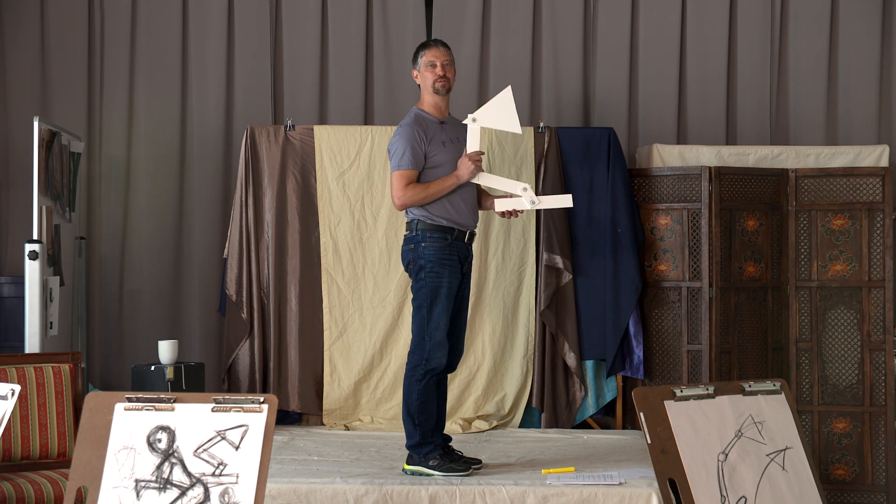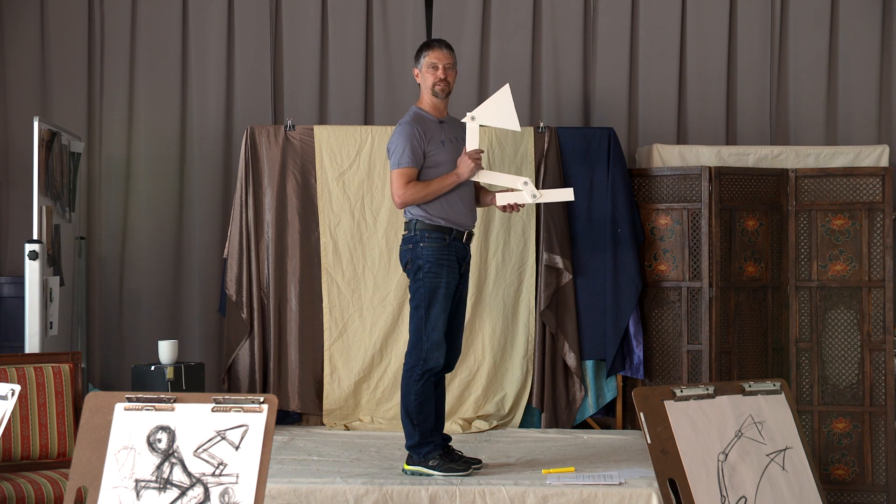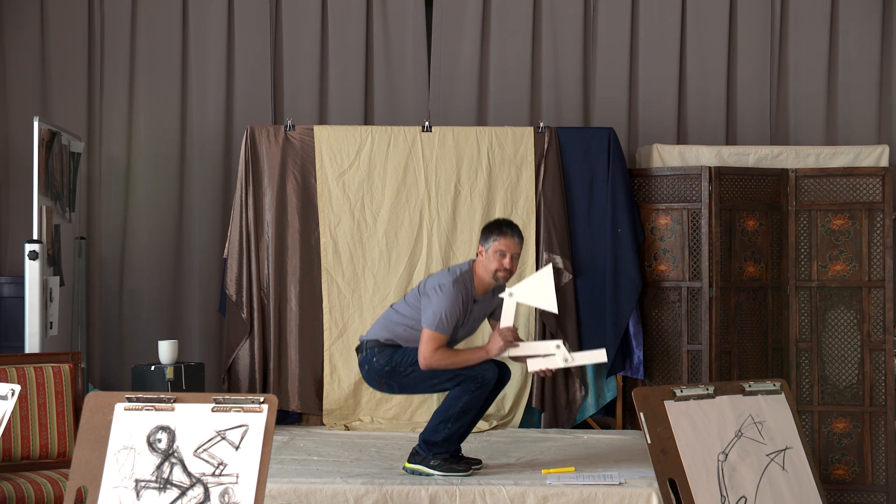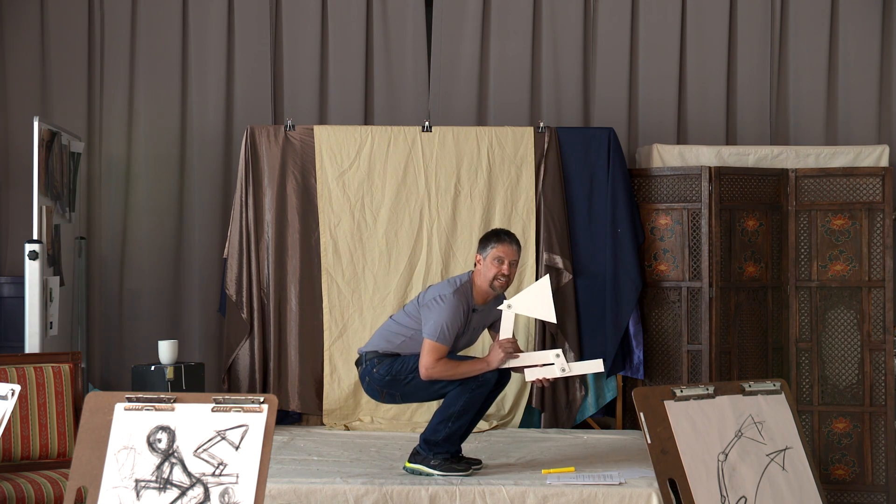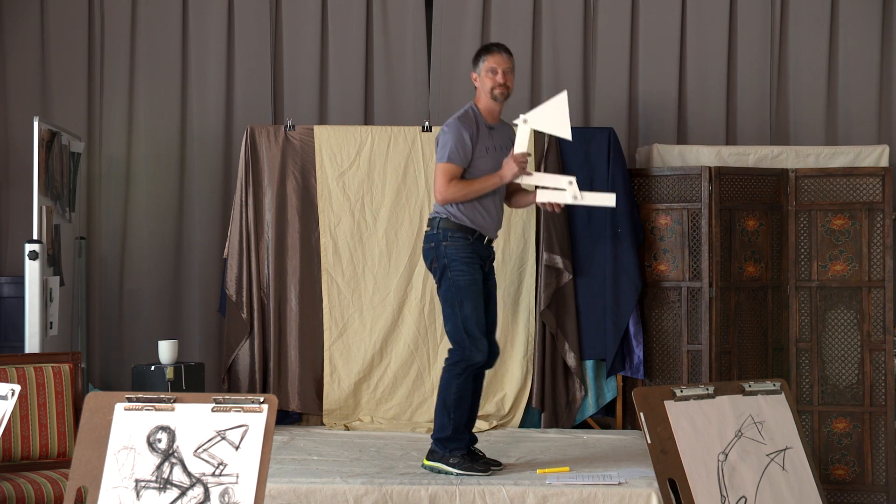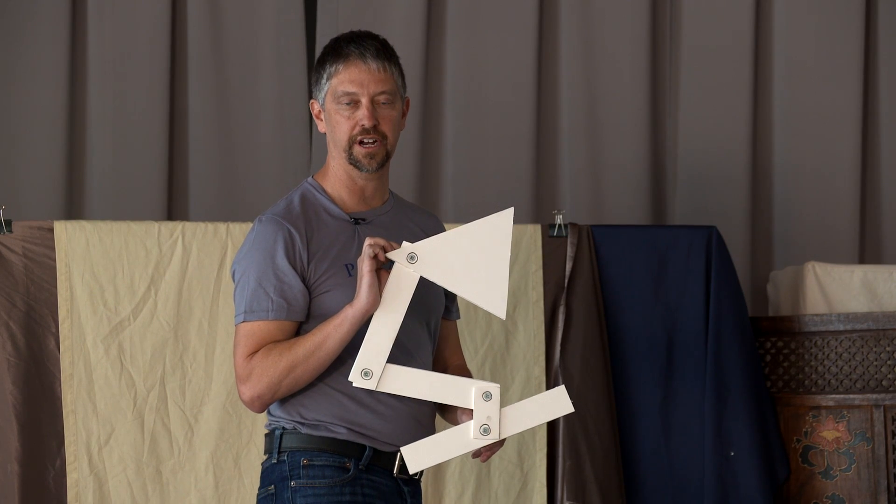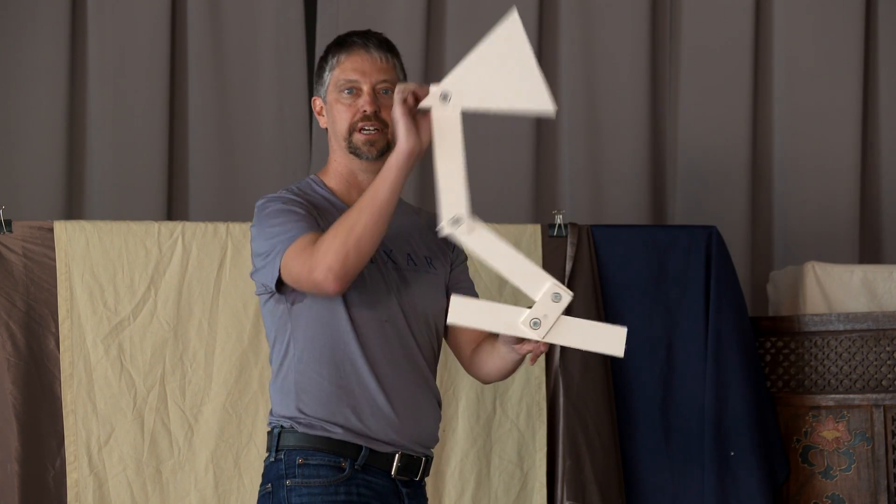Think about what you do when you jump from standing still. First you bend and squash down, then you jump stretching out. These are two different poses we're going to need for our lamp: squash and stretch.